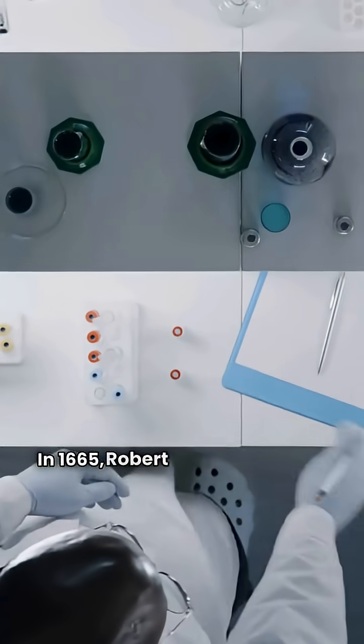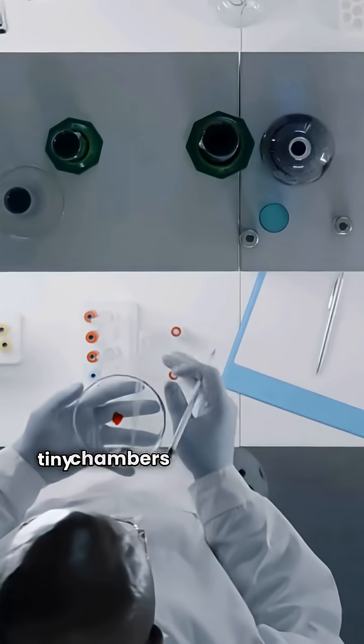In 1665, Robert Hooke examined cork and discovered tiny chambers he named cells.